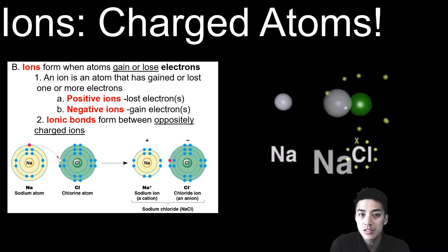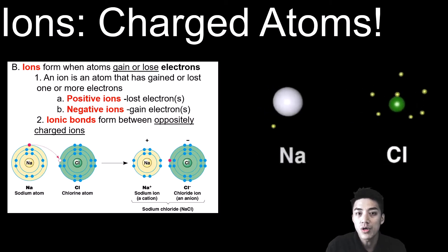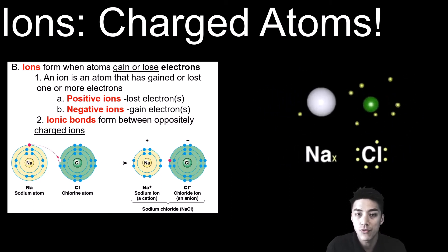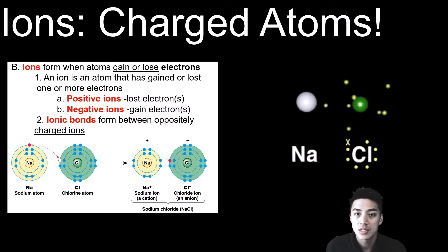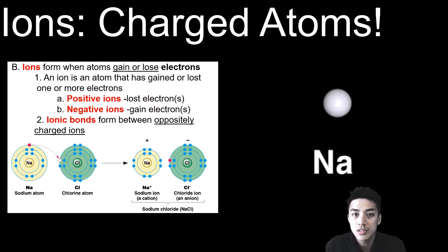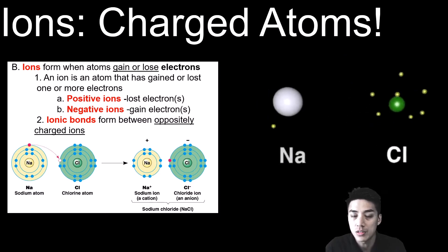You can see in the illustrations how sodium gives up one of its electrons to chlorine to form sodium chloride. Sodium has now become an ion, chlorine becomes an ion, and those two combine to form a compound we call salt.